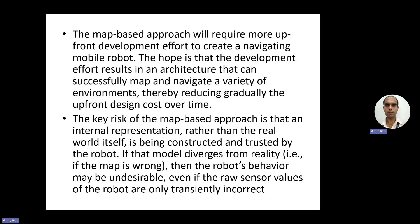The key risk of the map-based approach is that an internal representation — rather than the real world itself — is being constructed and trusted by the robot. The operator or robot has built a map internally, and that is what the robot trusts rather than the external environment. If that model diverges from reality — if there is some error in the map — the robot's behavior may be undesirable because it is blindly following the map, even if the raw sensor values are only transiently incorrect.